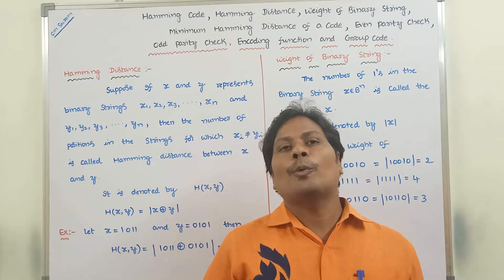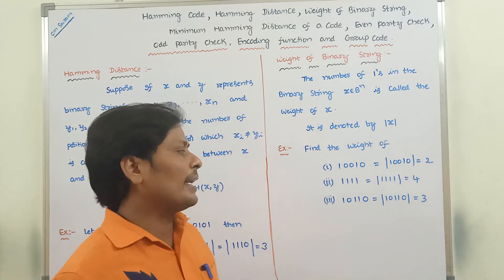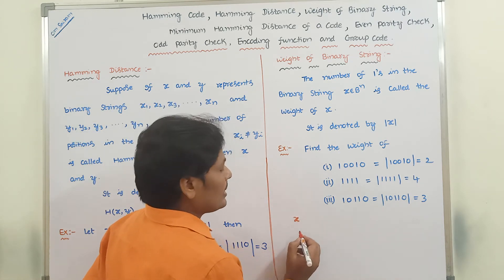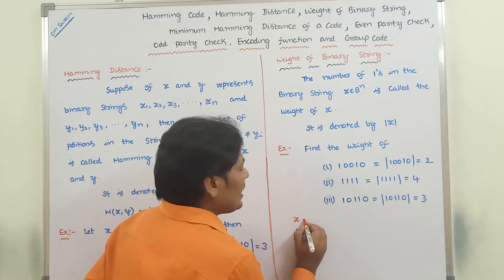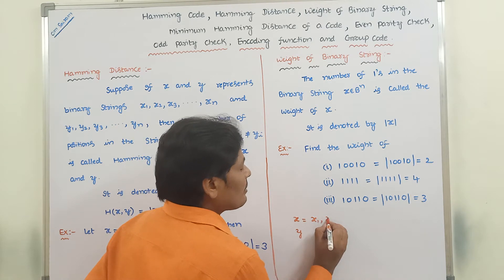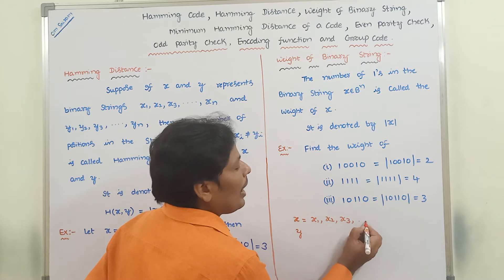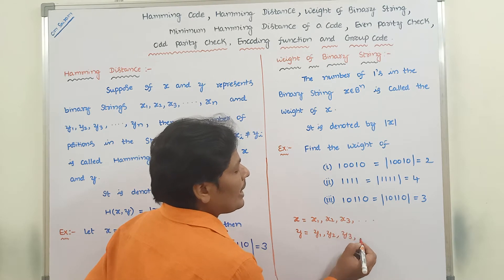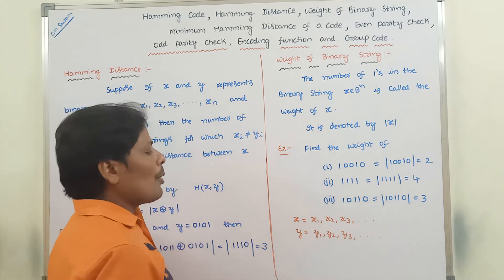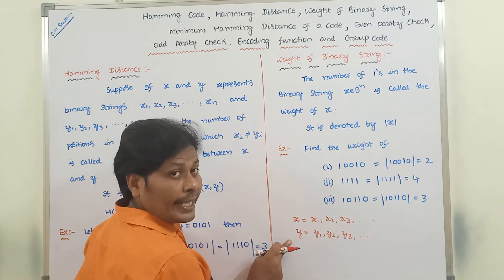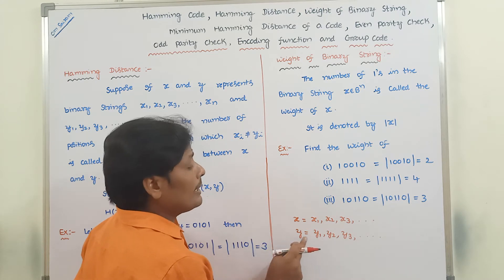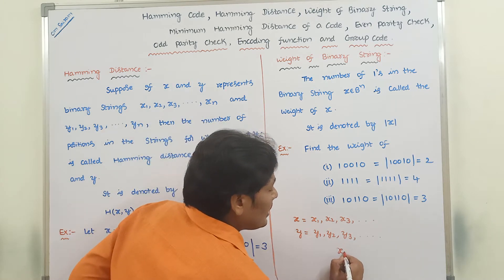In this video, we have to discuss about the first definition, that is Hamming distance. Let us consider two binary strings x and y. The binary string x contains the bits x1, x2, x3, etc. The binary string y contains the bits y1, y2, y3, etc. Now, comparing these two binary strings x and y, we look at the number of positions in the strings where xi is not equal to yi.